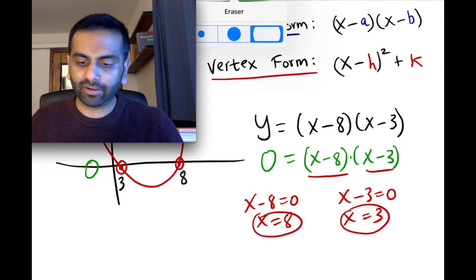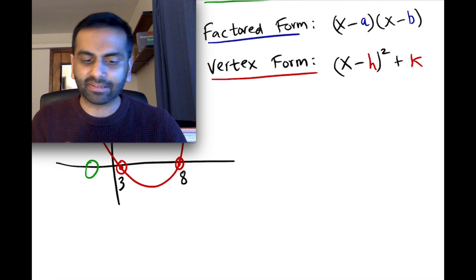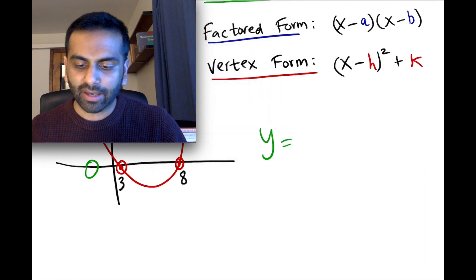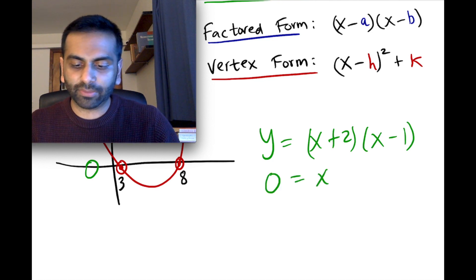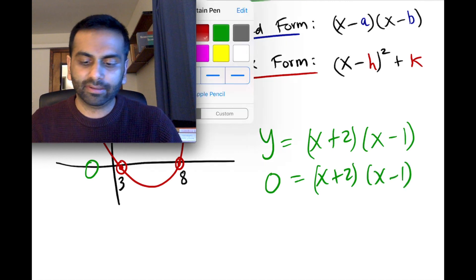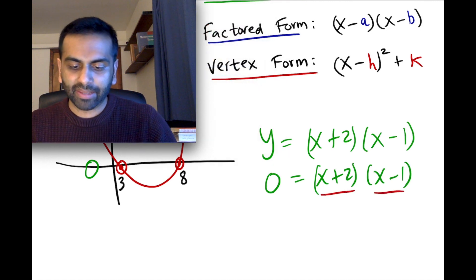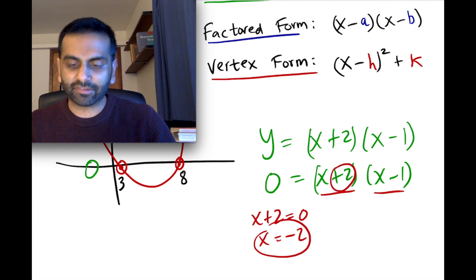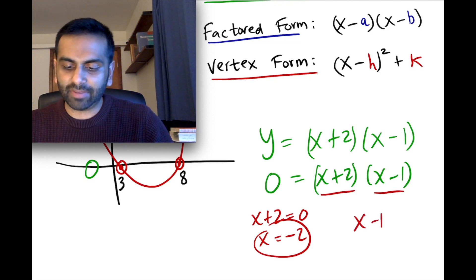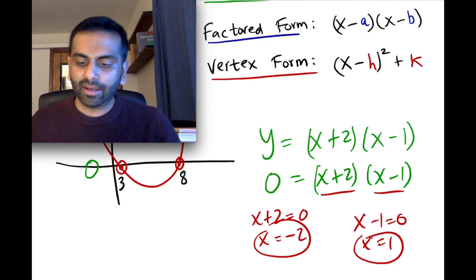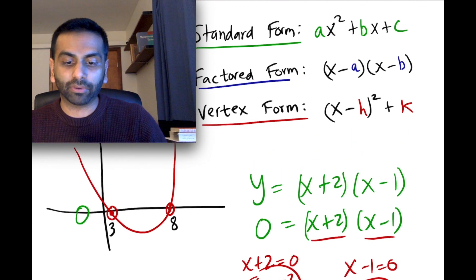Notice if the numbers were positive, like y equals x plus 2 times x minus 1, and you find the horizontal intercepts by setting 0 equal to that. If x plus 2 equals 0, you subtract 2 from both sides to get x equals negative 2. If there's a plus, it's the negative version of that number that's your horizontal intercept. And x minus 1 equals 0 gives x equals 1. That's how you find horizontal intercepts using factored form.